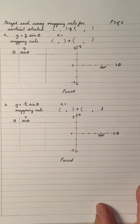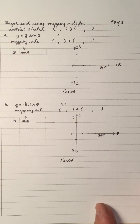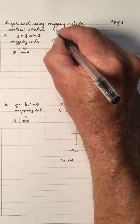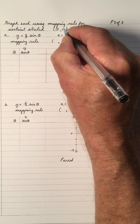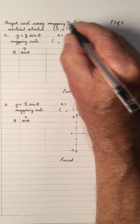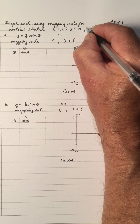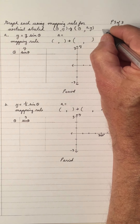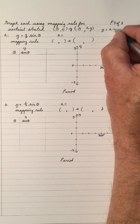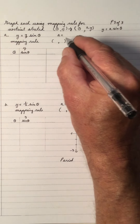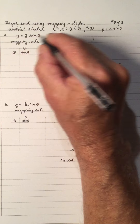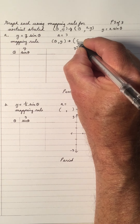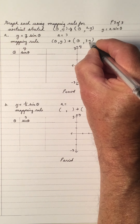Let's continue and do a couple of graphs based on the mapping rule for the vertical stretch. The mapping rule is (theta, y) → (theta, ay), and the equation is y equals a sine theta. For this graph, a is three, so we get the mapping rule (theta, y) → (theta, 3y).